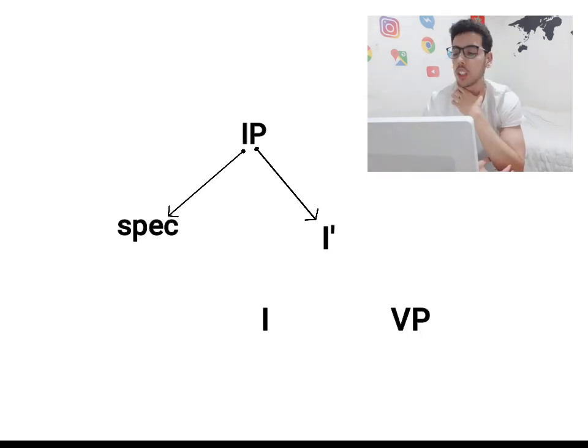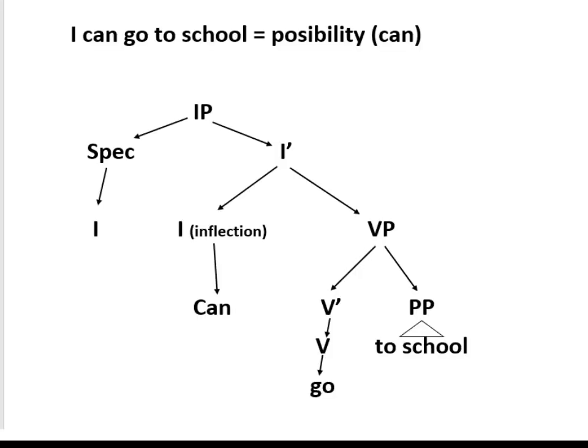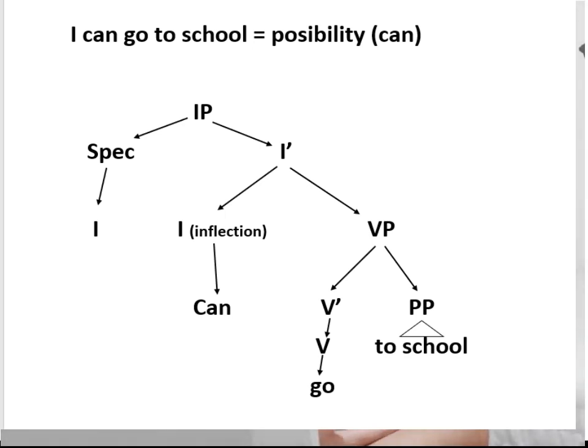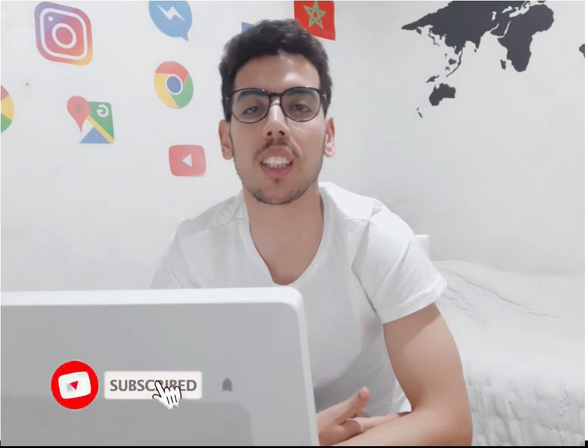Then we have VP. Within IP you can find a specifier and an I-bar. The I-bar contains I, then VP. For example, the sentence 'I can go to school': the whole structure — we have IP, we have specifier 'I' which is a pronoun, then we have I-bar containing I, then inflection which is 'can', then VP. Within VP you find a V-bar, then verb 'go', then PP which is a prepositional phrase. This is how we do it — it's not that different from the classical theory, but in terms of components like DP and NP it seems better.